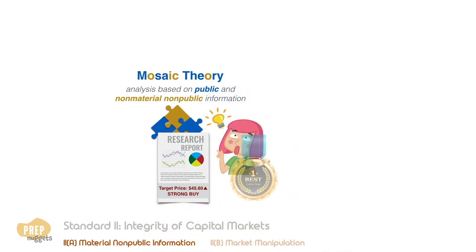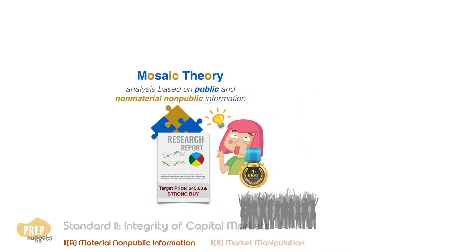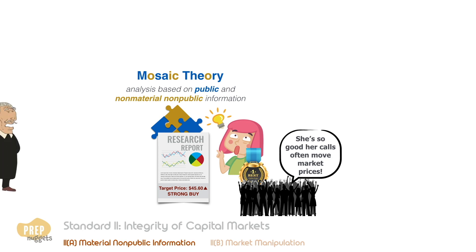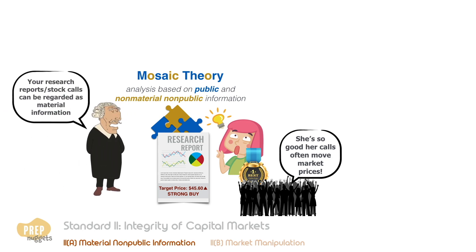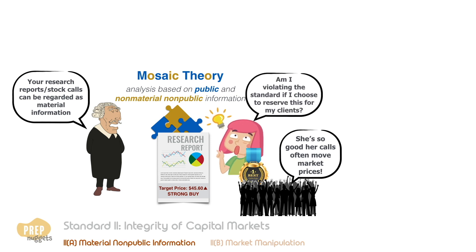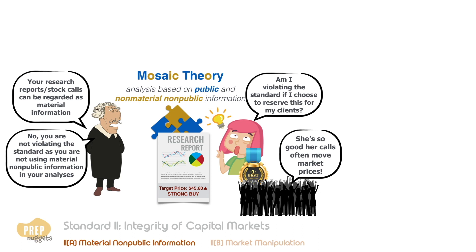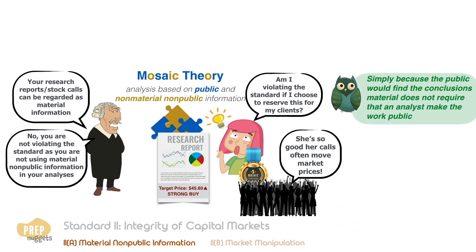Now, let's say you are a well-respected analyst and your stock calls tend to move market prices. So, in a way, your stock analyses can be considered material information. Suppose you choose to reserve this for your clients to trade instead of releasing it to the public — would you be violating Standard 2a? Thankfully, in this case, you did not violate Standard 2a. This is because none of the information that you used to arrive at your conclusion is material non-public information, which is the premise of mosaic theory. As such, you are not required to release your analysis to the public before you or your clients can trade on it. Simply because the public would find the conclusions material does not require that an analyst make the work public.